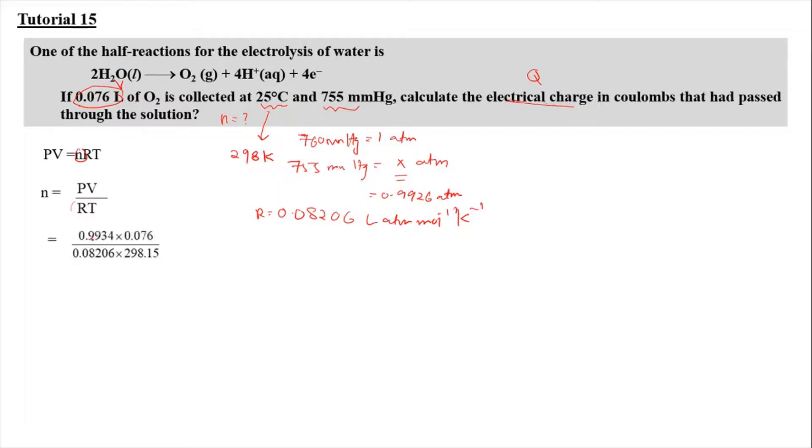So P here is 0.9934 multiplied by 0.076, which is given in the equation. 0.08206 is the gas constant. And the temperature needs to be in the unit of kelvin, so 298.15. Lastly, the number of mol we will get is 3.09 times 10 to the power of negative 3 mol.